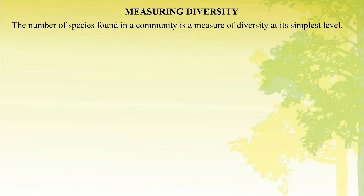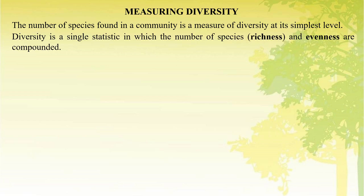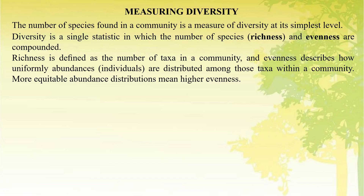The number of species found in a community is a measure of diversity at its simplest level. Diversity is a single statistic in which the number of species and evenness are compounded. Richness is defined as the number of taxa, that is species, in a community, and evenness describes how uniformly abundance — that is, individuals — are distributed among those taxa within a community. More equitable abundance distribution means higher evenness.